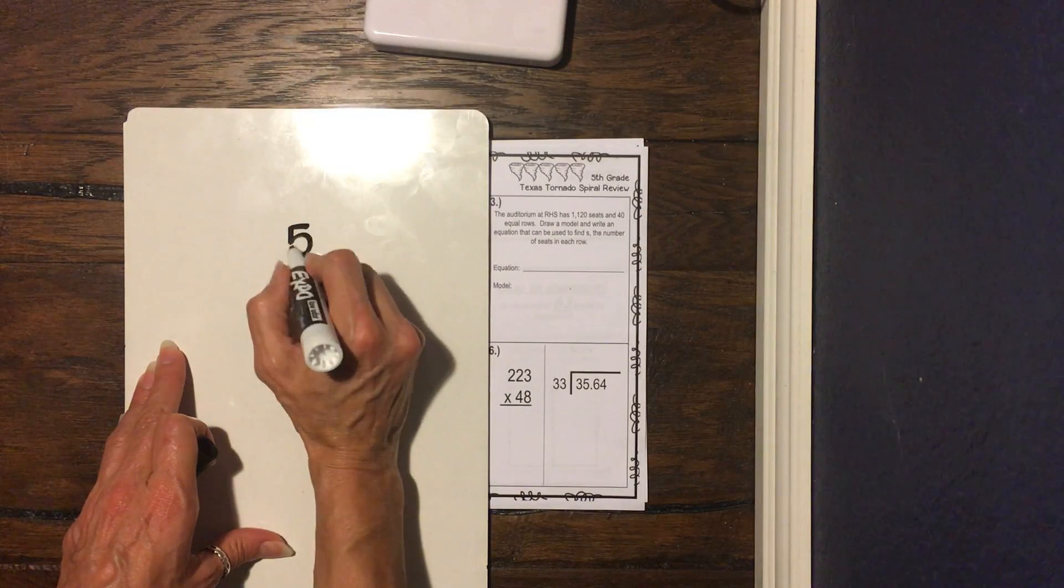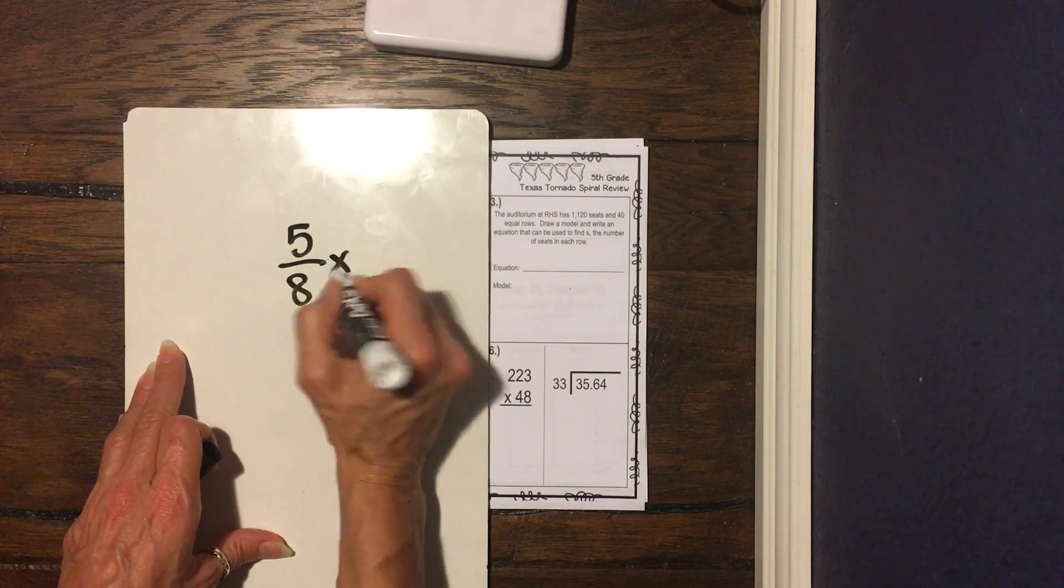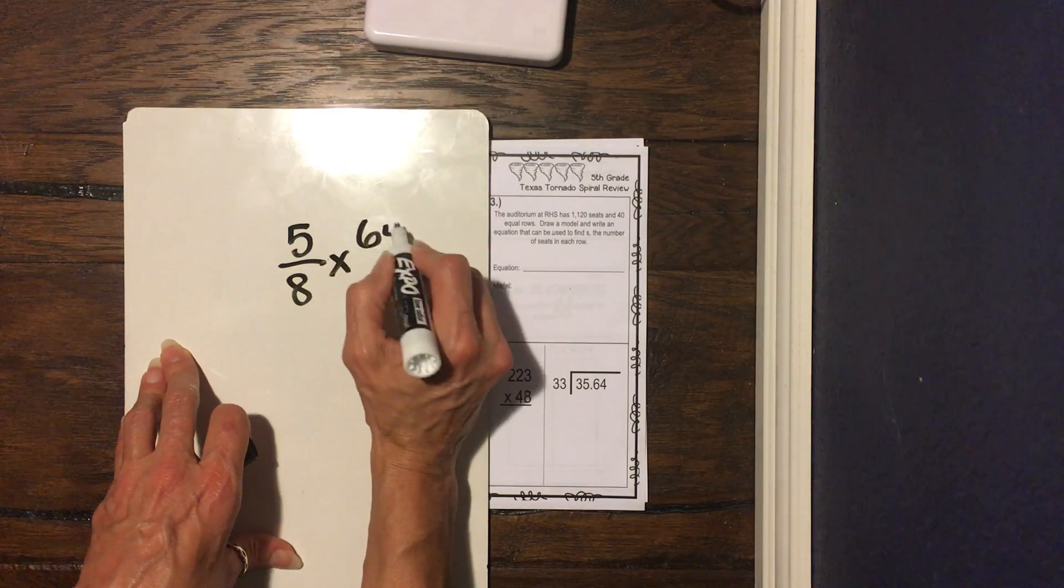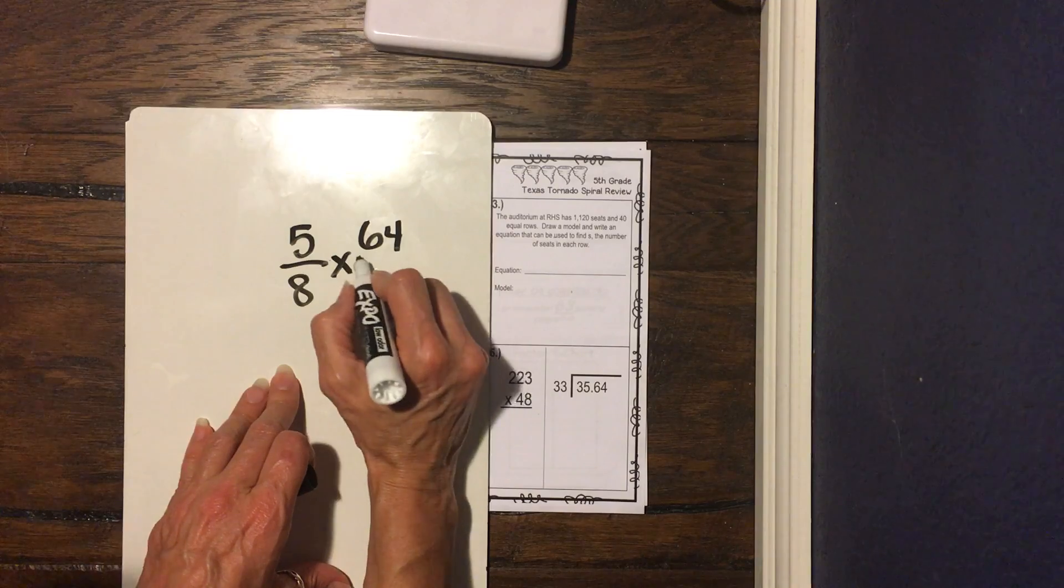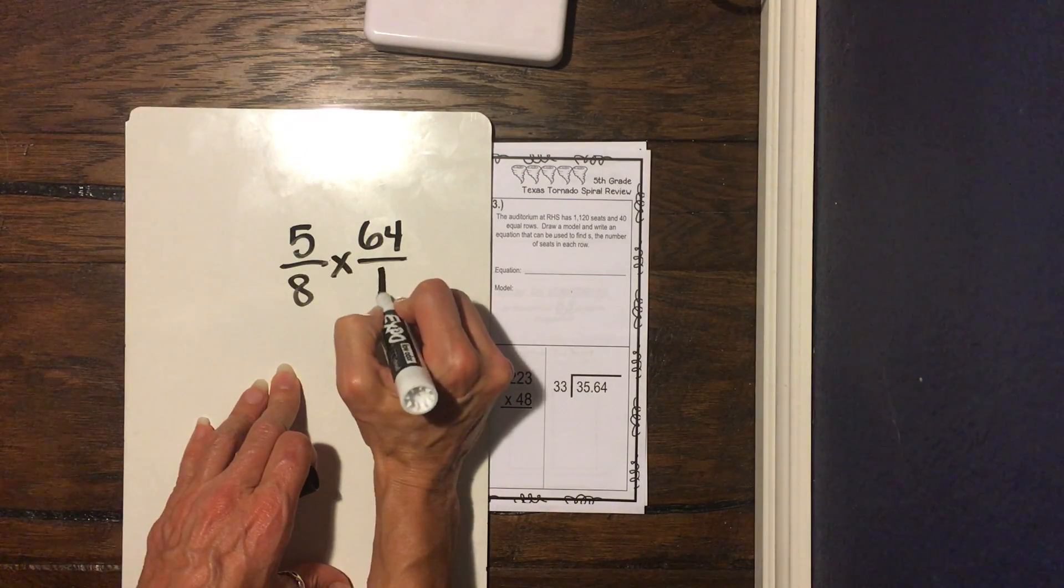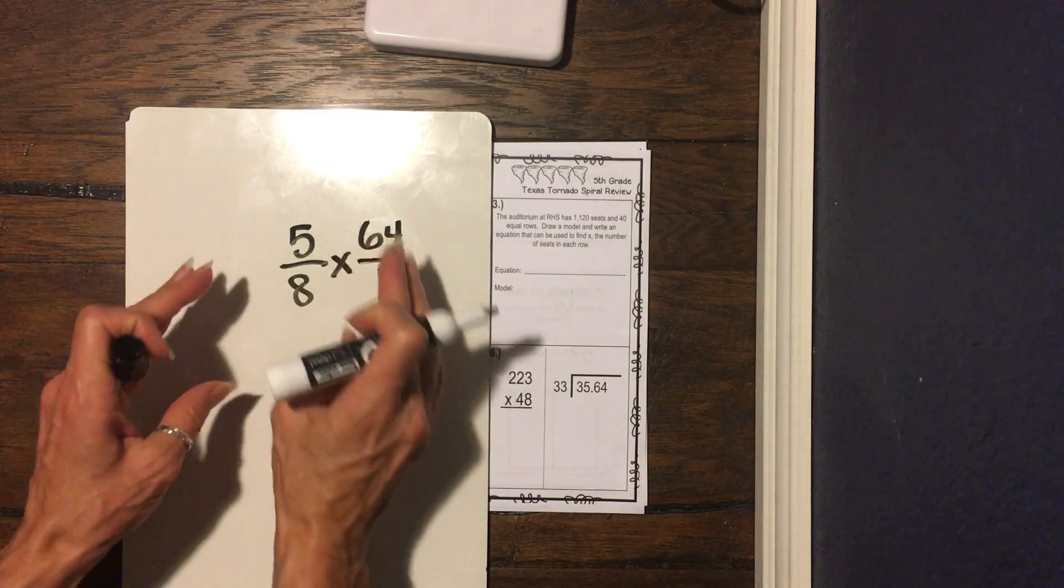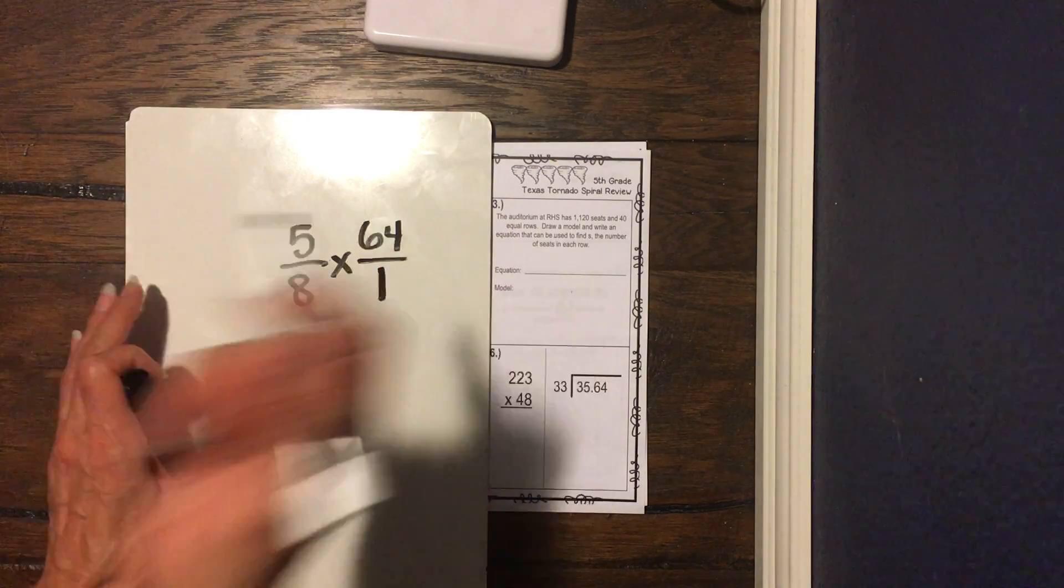So once we do our math, our answer should match however many that we have shaded. Okay, so let's do our math. So we have five eighths times 64. Well, guys, when we multiply, remember when we multiply by a whole number, we have to turn it into a rational number, so we have to put a one under it.